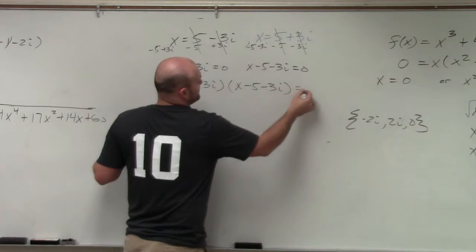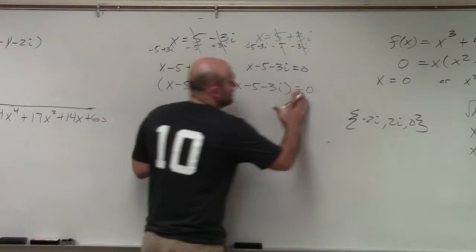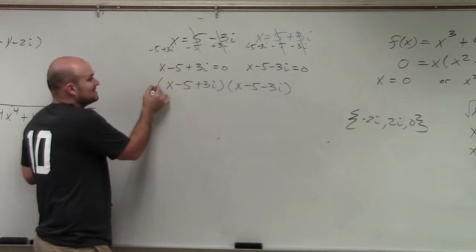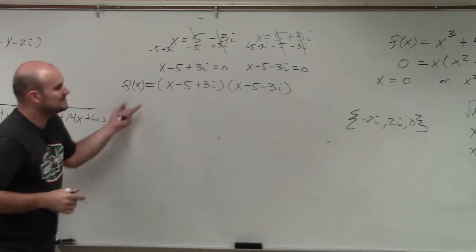So instead of doing them equal to 0, like we did when we had the zero product property, I am going to set them equal to f of x because that's what we're trying to find.